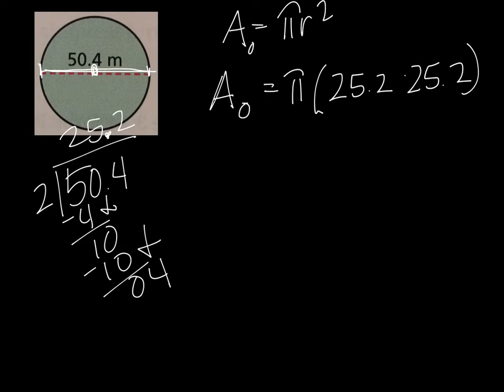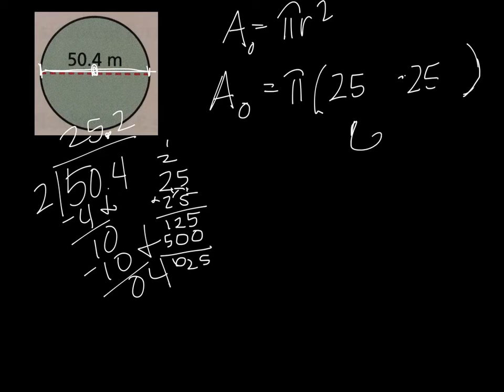Now this is going to get a little bit trickier here. Because we are estimating, I see that we're supposed to not do the 2 tenths. We're just supposed to estimate it to be close to 25. If we were trying to be exact, we would keep 25.2. But because they're not having us do that, we'll just find out what is 25 squared. So I have to do 25 times 25. 25 times 25 is 625.